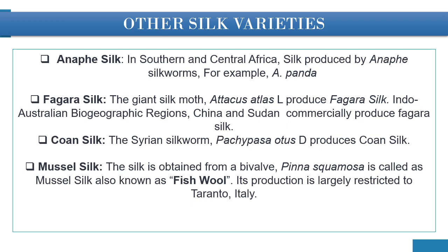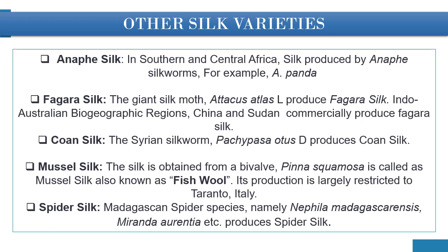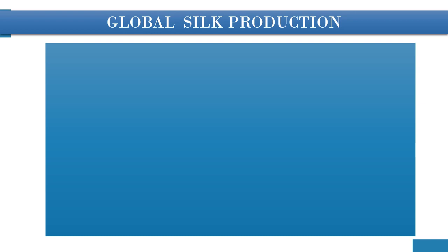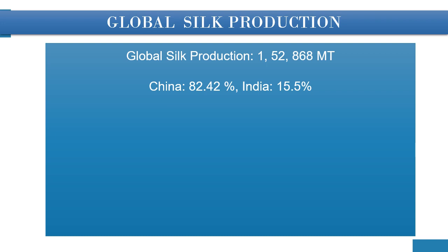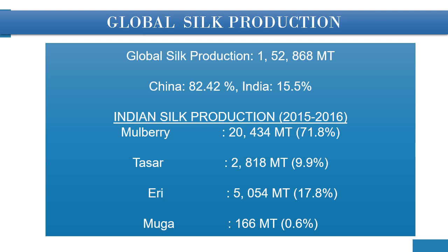Sea silk, produced from bivalve Pinna squamosa, is also known as byssus silk; its production is largely restricted to Taranto in Italy. Spider silk: the Madagascan spider species Nephila madagascarensis and related species also produce spider silk. Regarding global silk production in 2015–16: global production was 1,52,868 metric tons, with China contributing 82.42% and India 15.5%. In Indian silk production in 2015–16: mulberry 20,434 metric tons, tassar 2,818 metric tons, eri 5,054 metric tons, and muga 166 metric tons.